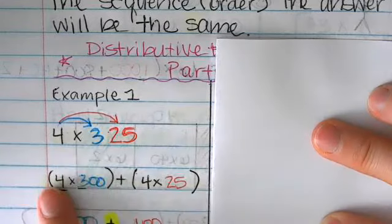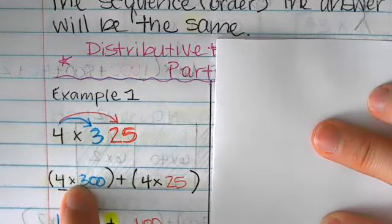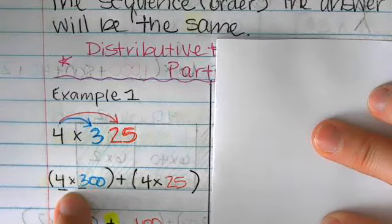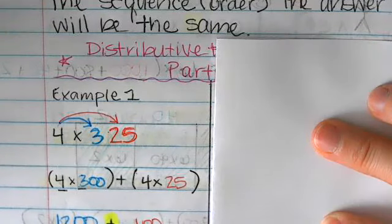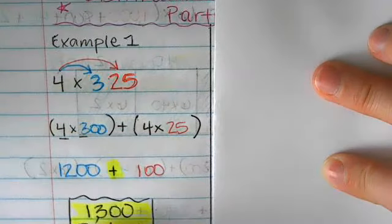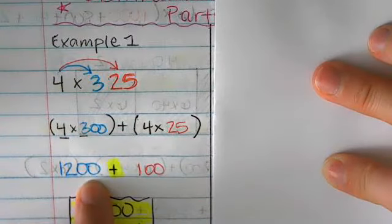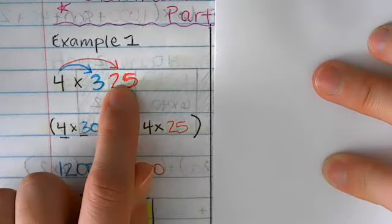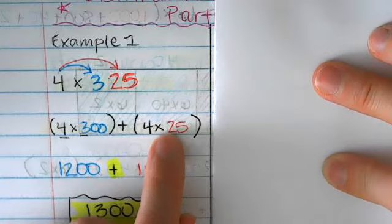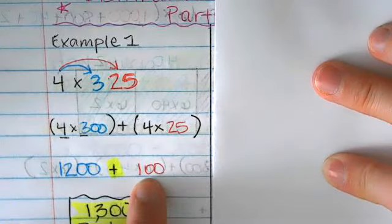I'm going to distribute this 4 to the 3 in the hundreds place and the 4 to the 25. So I'm going to multiply 4 times 300. 4 times 3 is my basic math fact, which is 12 with two zeros on the back. Then 4 times 25, that's like having four quarters. When you have four quarters, it's $1 or 100 pennies, right?